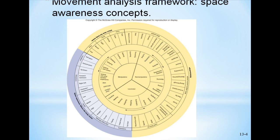Many of you have a copy of the movement wheel that came with your textbook. This is the movement analysis framework for space awareness concepts. If you look at the purple part of this wheel — usually green on the actual wheel — that is the space awareness concepts. The outside ring represents the definition of the movement concept, which is where the body moves. The second ring lists the components: space awareness includes location, direction, levels, pathways, and extensions.